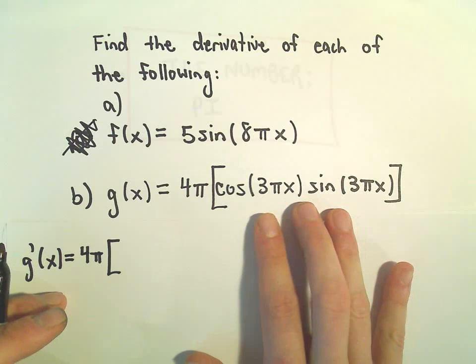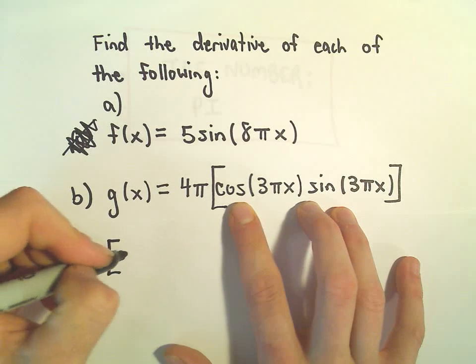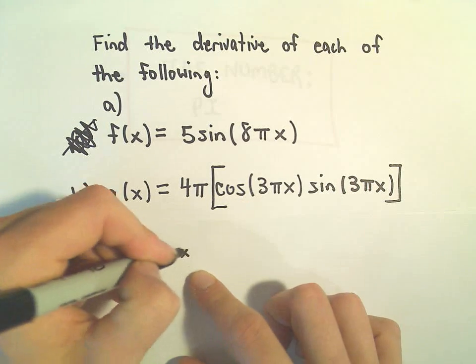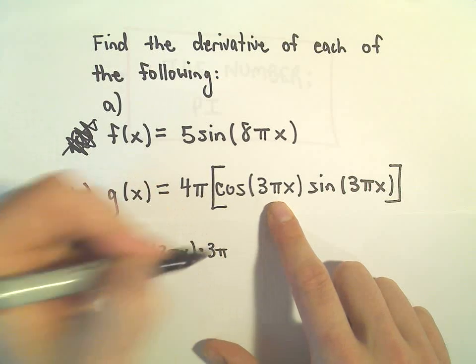Well, now I've got to use both the product rule and the chain rule. So, the derivative of cosine will be negative sine. Let's leave the 3πx alone. Then we have to take the derivative of the inside, which would be 3 times pi.